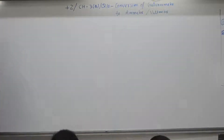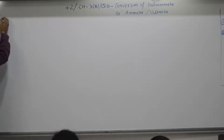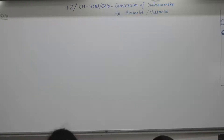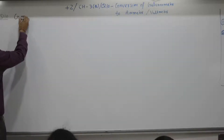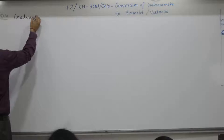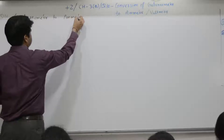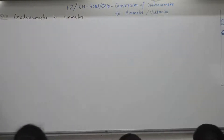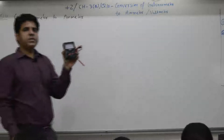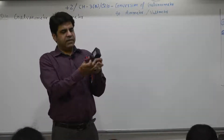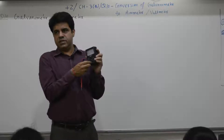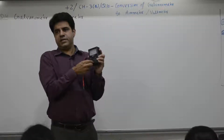Question number 10, first part deals with the conversion of a galvanometer to an ammeter. This moving coil galvanometer can be changed to a voltmeter or an ammeter — the same device can be changed.